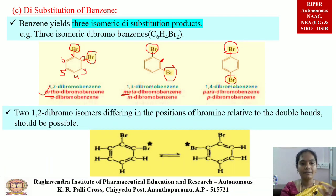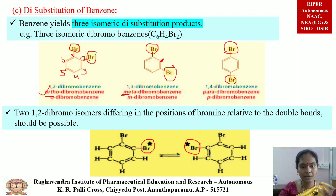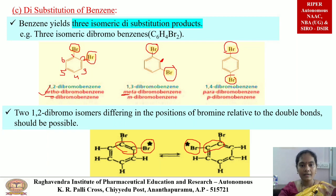For the 1,2-dibromoisomers, the bromine may substitute at two different positions. Both structures appear correct, but when observing the carbon atoms — in one case the carbons bearing bromine are double-bonded, and in the other they are connected by a single bond — two possible isomers can be observed for 1,2-dibromo aromatic structures.